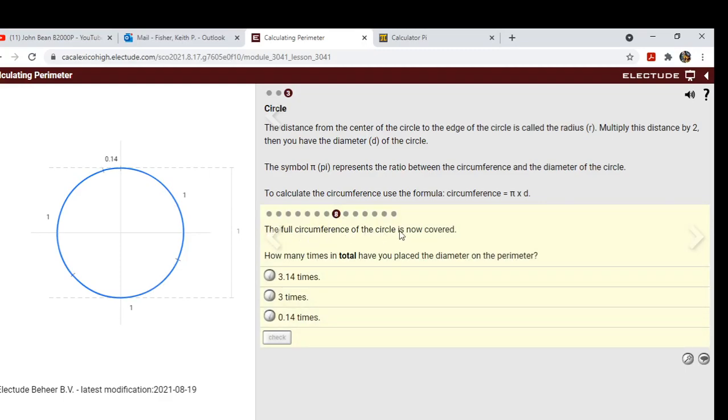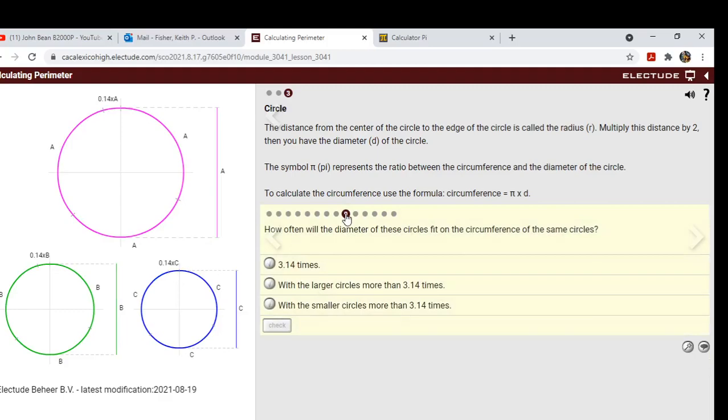Okay, the full circumference of the circle is now covered. How many times in total? Well, three point one four times. All of these, the diameter is going to take three point one four times.